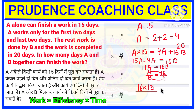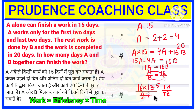We divide total work by the combined efficiency of A and B together: 240 divided by (16 plus 11) equals 240 divided by 27, which simplifies to 80 divided by 9 days.